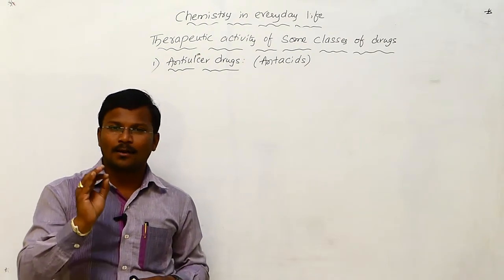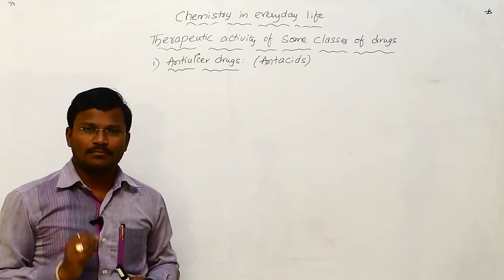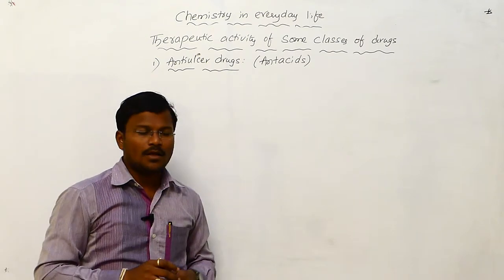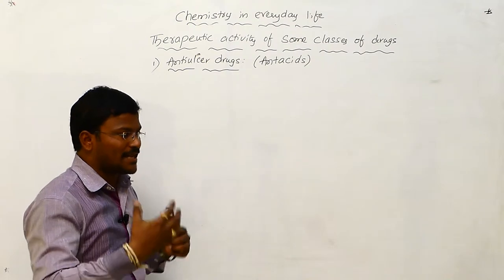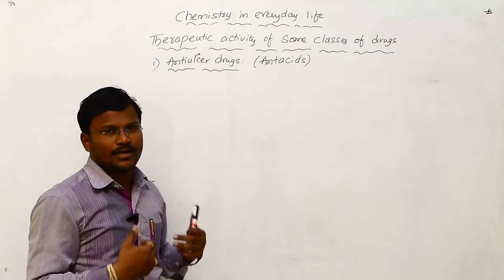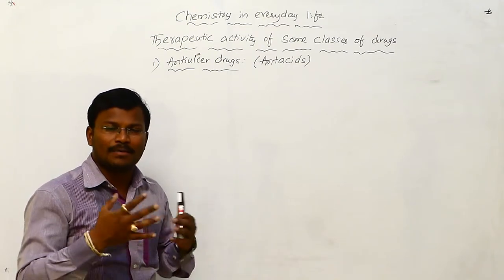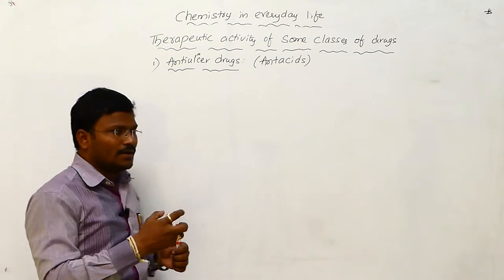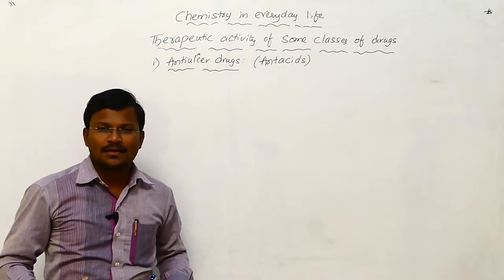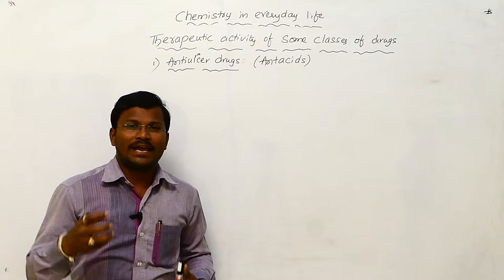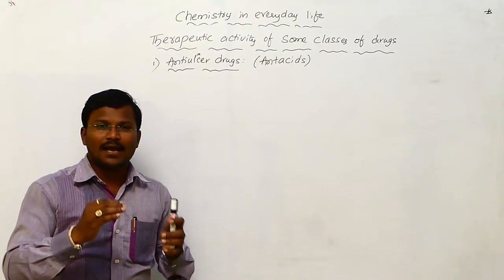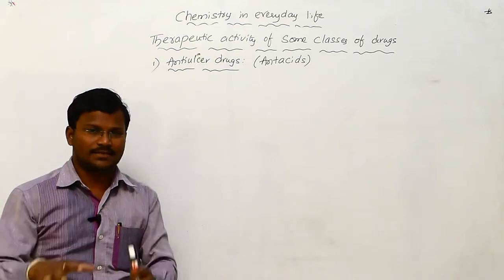To overcome acidity, in earlier days most people used to take sodium bicarbonate and aluminum and magnesium hydroxides as remedies. These substances are basic in character, and upon usage they decrease the quantity of HCl or hydrochloric acid in the stomach, thereby decreasing the acidic character of the stomach.